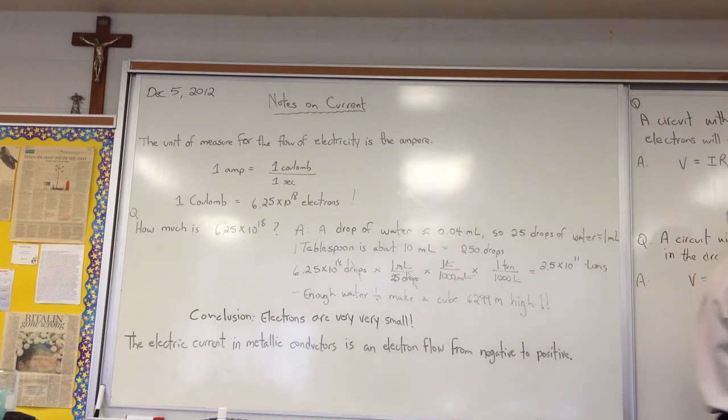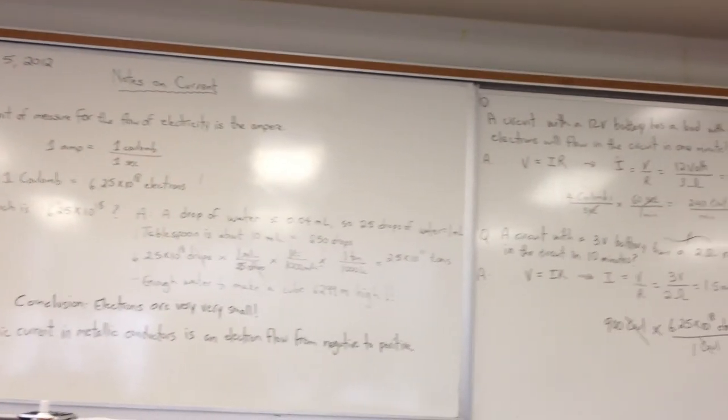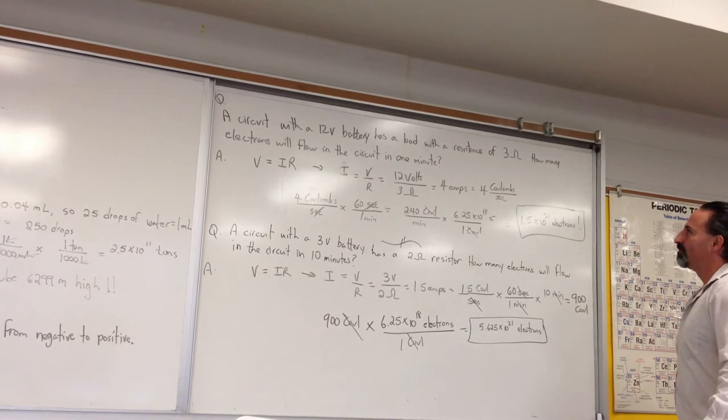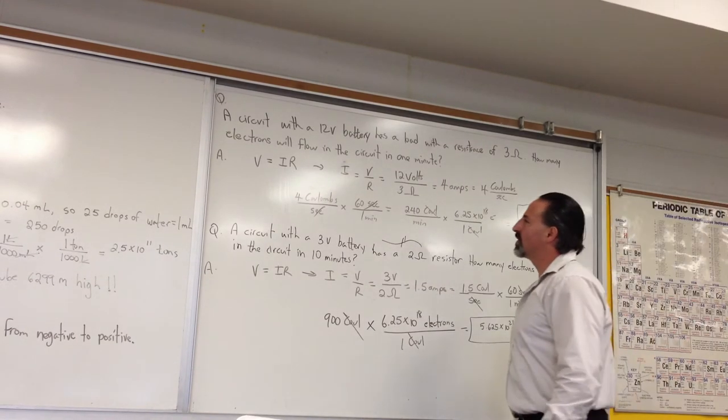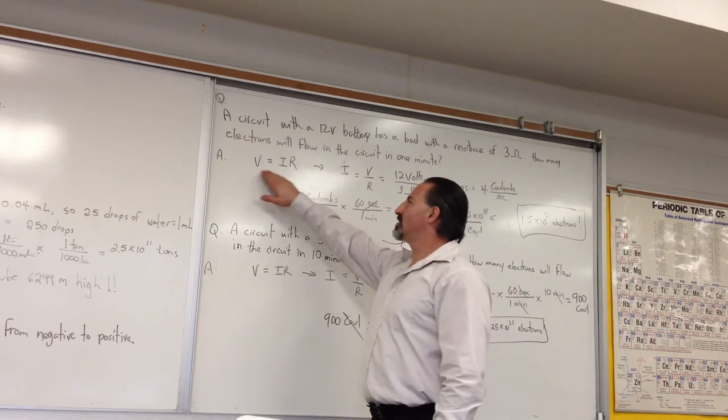So, here's a question we can solve now using this new knowledge. A circuit with a 12 volt battery has a load of the resistance of 3 ohms. How many electrons will flow in the circuit in one minute? So, we use Ohm's law, V is equal to IR,